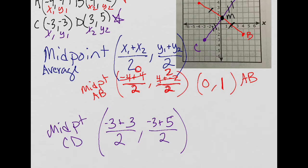PEMDAS on the top first, negative three plus three is zero, and zero divided by two is zero. We're looking good here. Remember, our goal is to see if these are the same. So negative three plus five is two, and two divided by two is one. So the midpoint of CD is zero, one, and the midpoint of AB was zero, one.